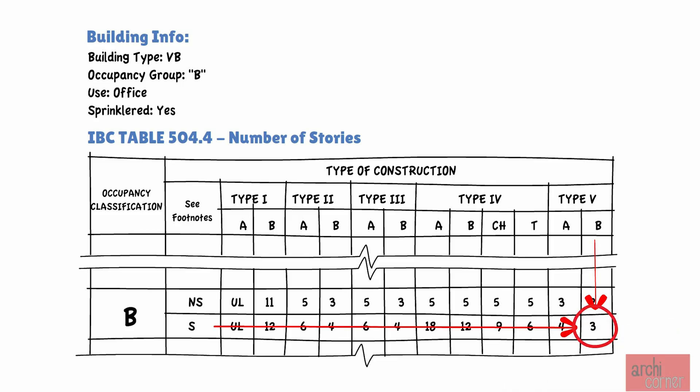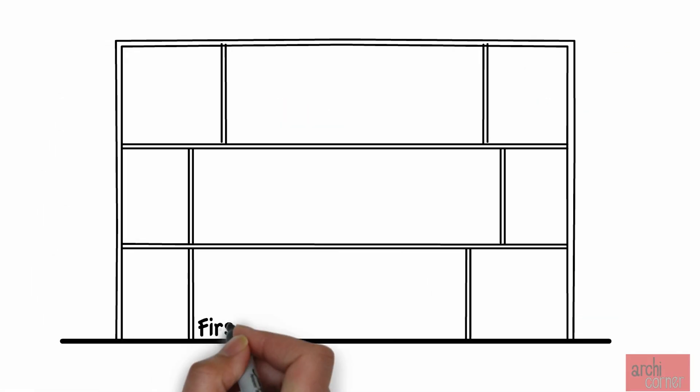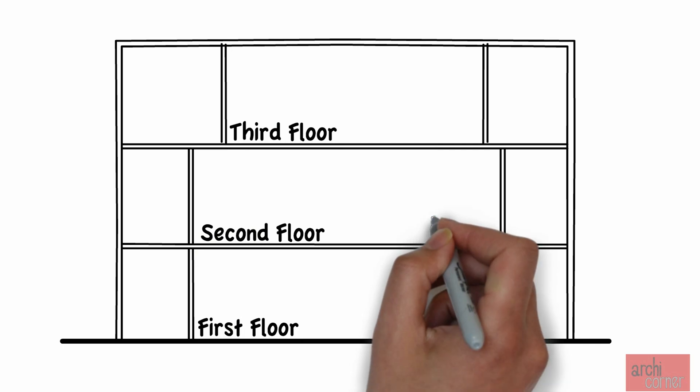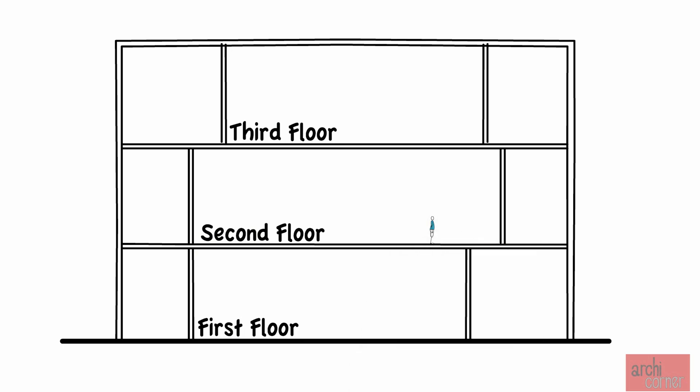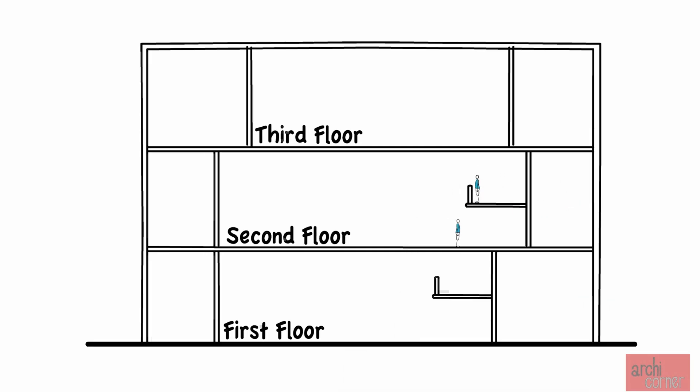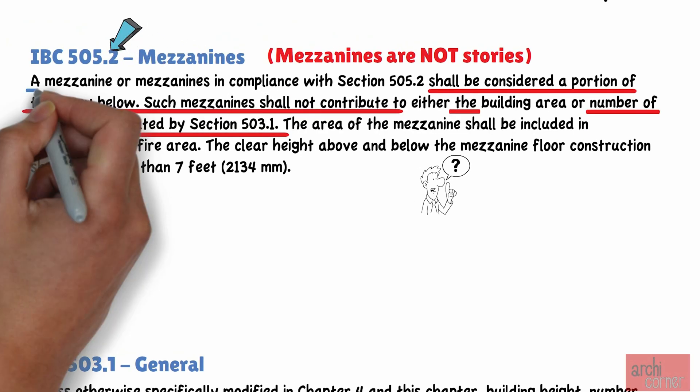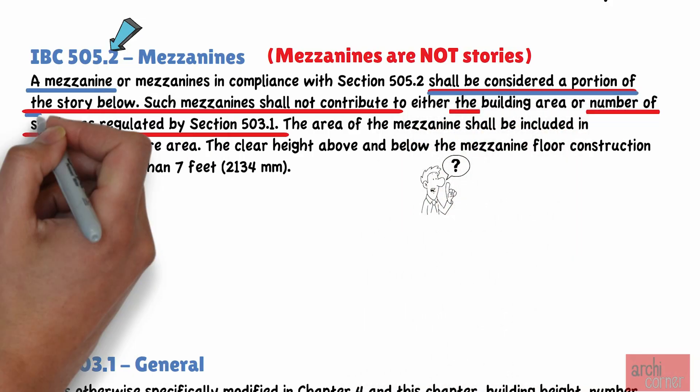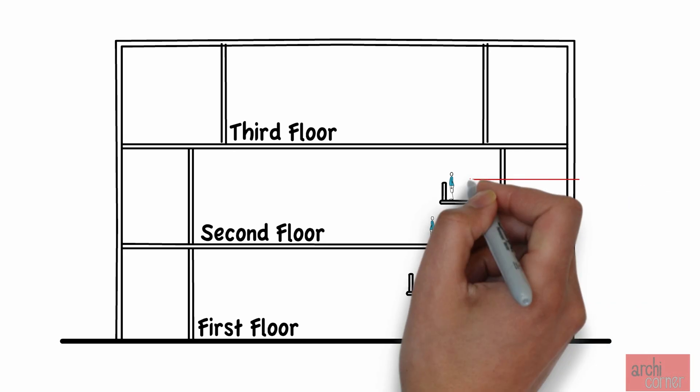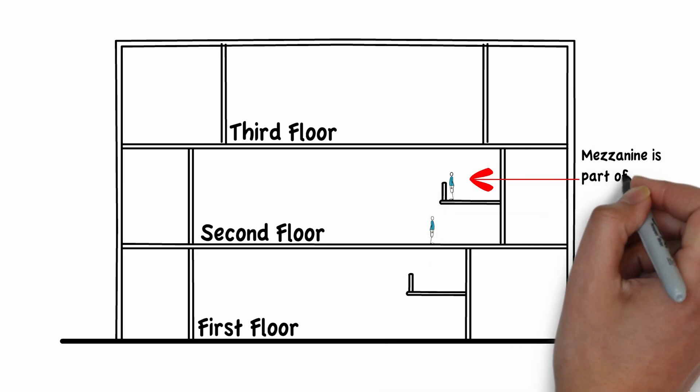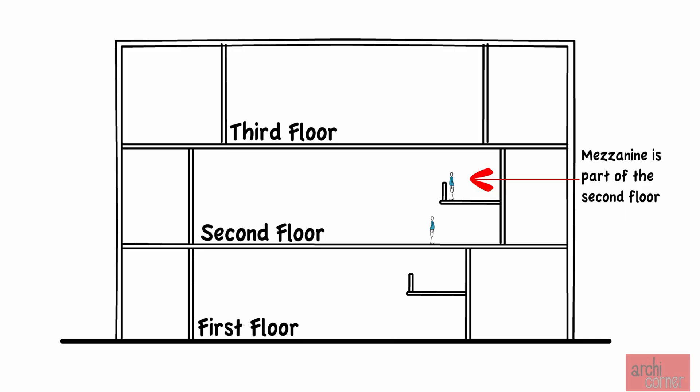So let's draw a section of a three-story building. Here we have a building that, as per table 504.4, is three stories. This is where a mezzanine can be useful because we could technically have a three-story building and within that building we could have mezzanines. For example, we could add a mezzanine to the second floor as shown here. And as you may remember, section 505.2, which we see here again, states that a mezzanine shall be considered a portion of the story below. Going back to our example, we can see that this mezzanine is still part of the second floor. It is not a separate story.